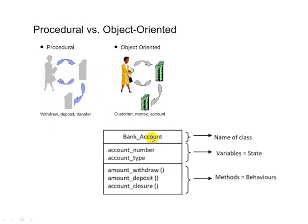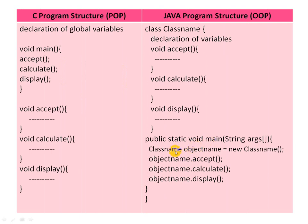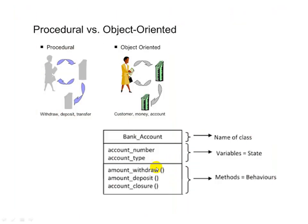We define a class named BankAccount. The class will contain some variables and methods. Variables will include bank account type, saving account, and account number. The class will also contain methods that the customer can use: money withdraw, deposit, and account statement print. All variables and methods are declared within the class BankAccount. In the main function, we create a BankAccount object and through that object we call functions like amount withdraw, amount deposit, and account closure.